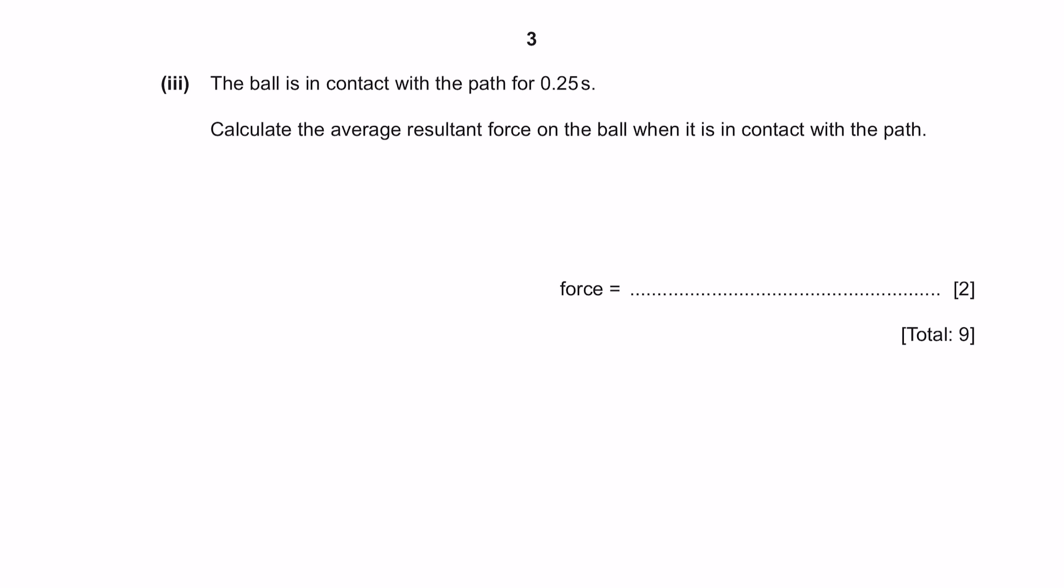Part 3. The ball is in contact with the path for 0.25 seconds. Calculate the average resultant force on the ball when it is in contact with the path. The formula for resultant force is F equals to MA. Alright, let's substitute the values. The mass of the ball is the same, which is 0.2. However, the acceleration is not given, so we have to calculate it using our formula of V minus U over T.